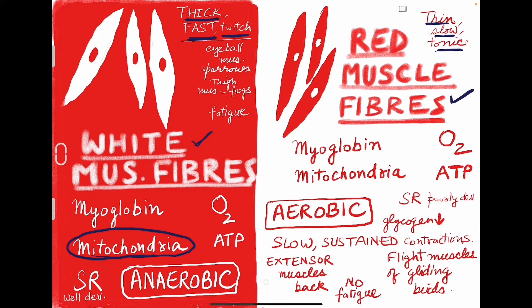White muscle fibers are anaerobic, so the mitochondria are very low in quantity. Whereas red muscle fibers have a lot of mitochondria. As compared to white muscle fibers, red muscle fibers have much more mitochondria.